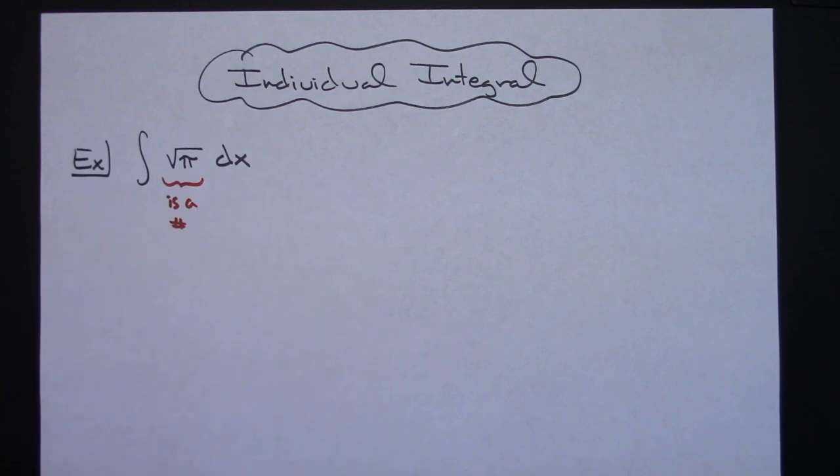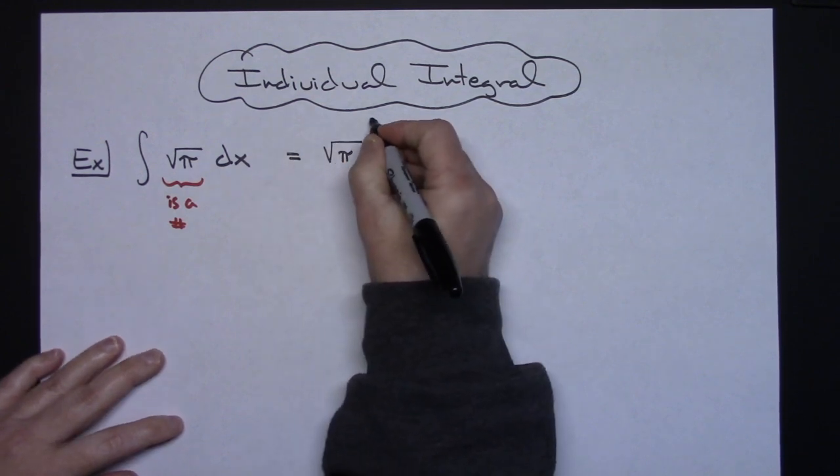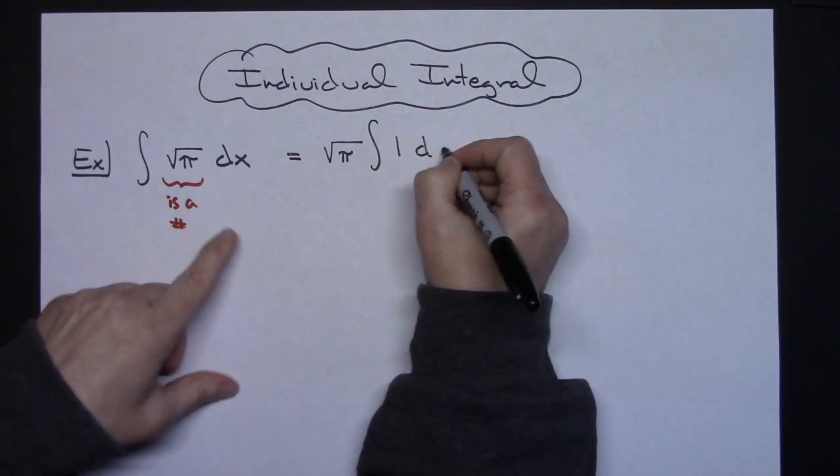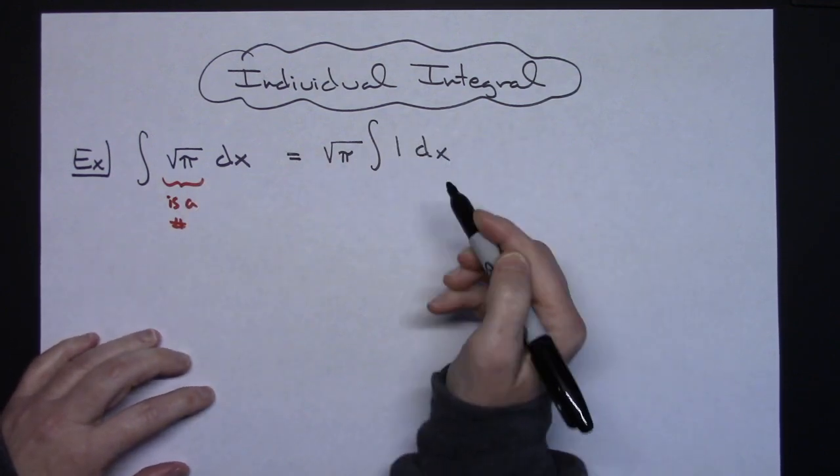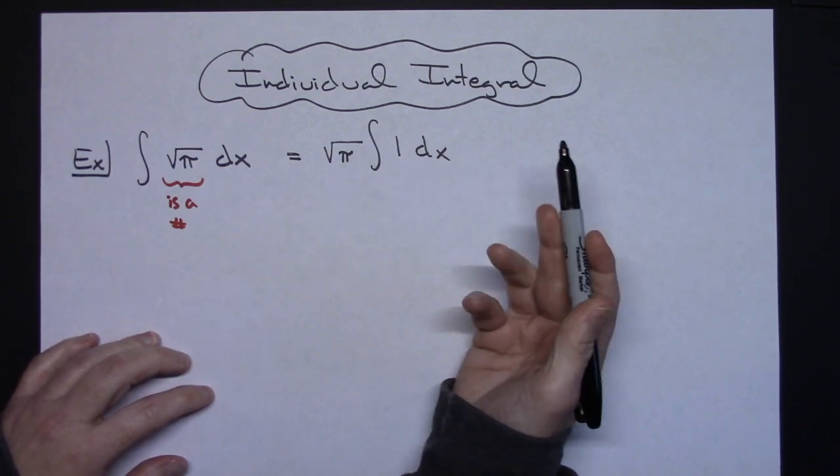I can pull it out in front of my integral sign. Well, as soon as I pull that out in front, square root of pi times the integral of that would leave me with an imaginary 1dx. Let's go ahead and write that in for that beginning calculus student. Now integrating 1dx is just going to be an x.